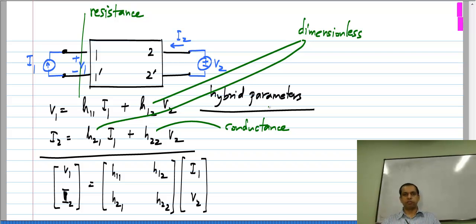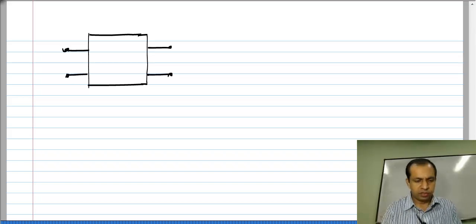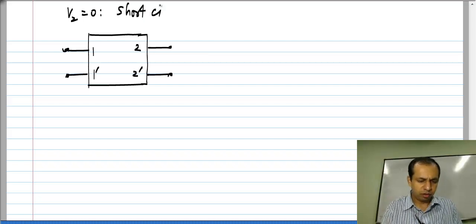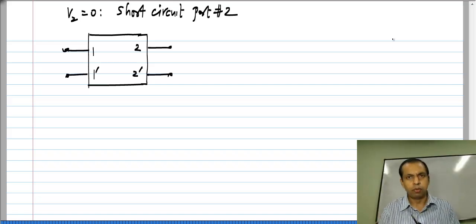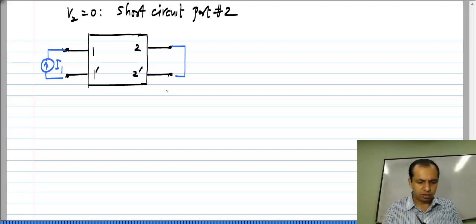Now evaluation of this is exactly in the same way as earlier. You set one of the independent variables to 0 and evaluate them. As before, you can take four different sets of the independent variables and evaluate everything, but the most convenient thing is to set one of them to be 0. So in the first case we set V2 to 0, which means a short circuit port number 2 and you apply I1 to this side and you measure V1 and I2.